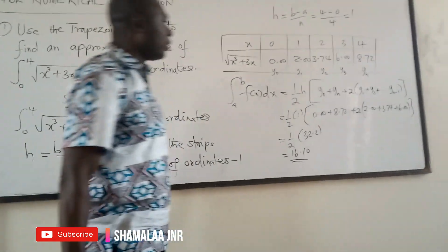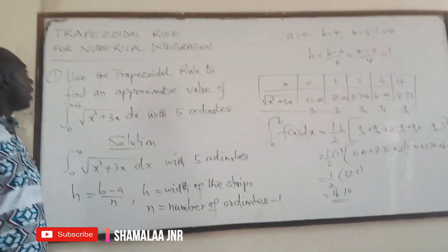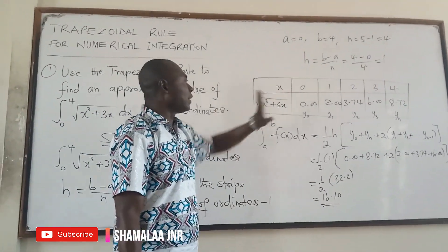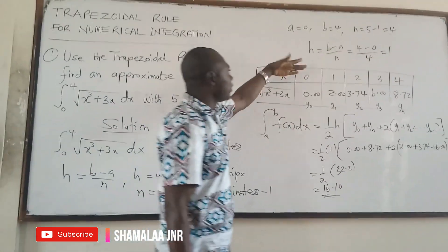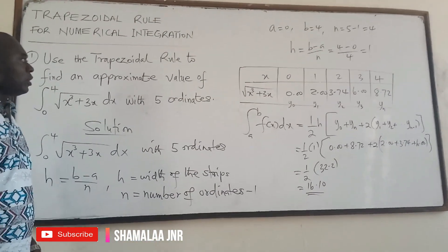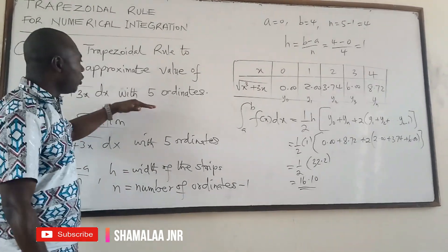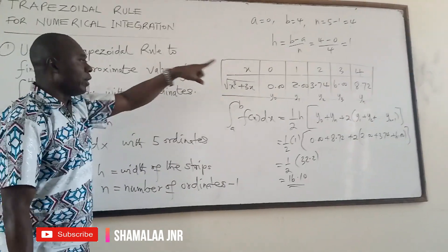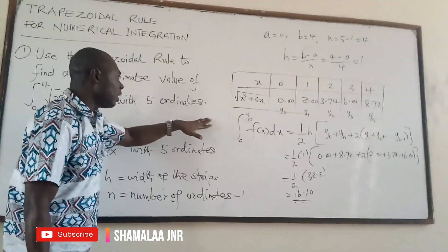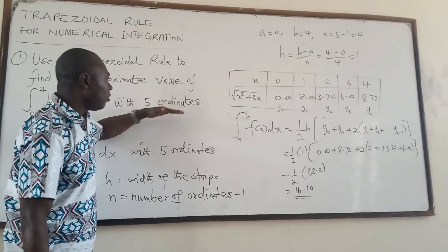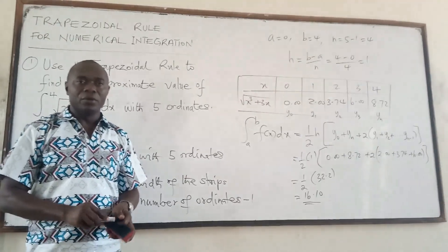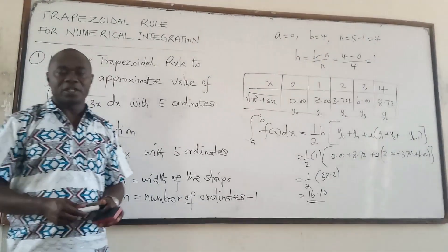This is basically how the trapezoidal rule for numerical integration works. It is not difficult at all — you just need to know the formula, how to calculate h, and the relationship between ordinates and intervals. The number of ordinates minus one gives you n. Thank you very much for your attention. For more videos, subscribe to my YouTube channel, Shemalai Jr.